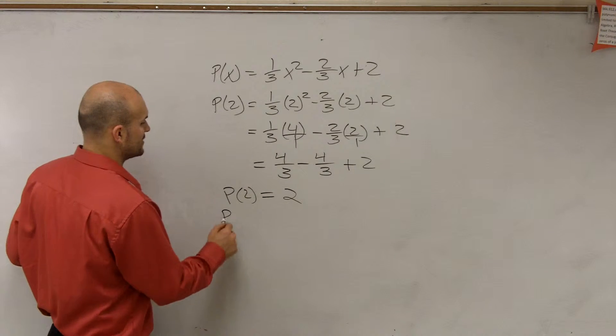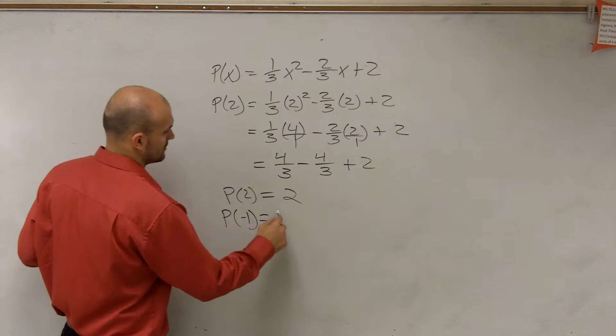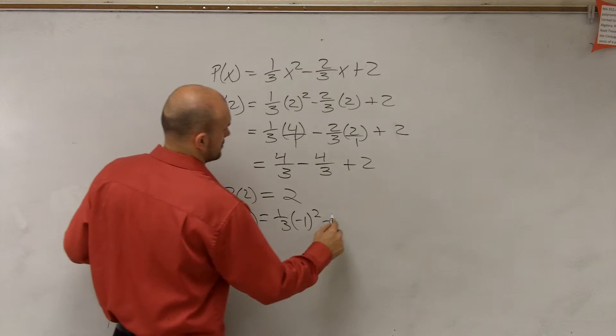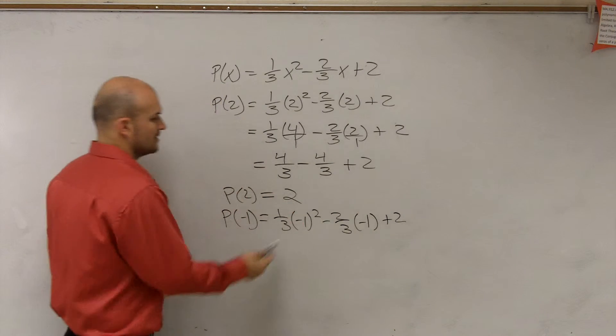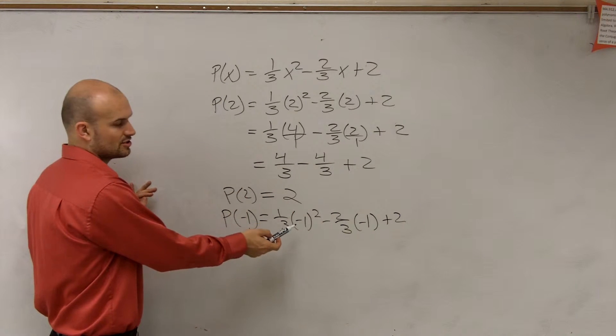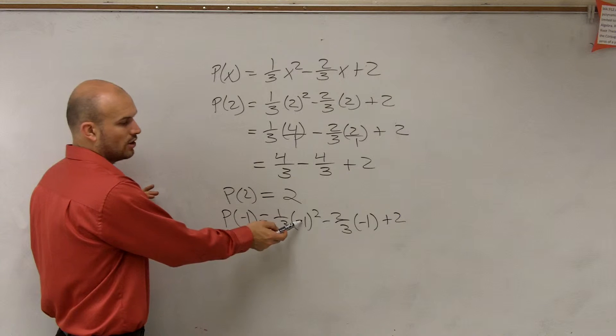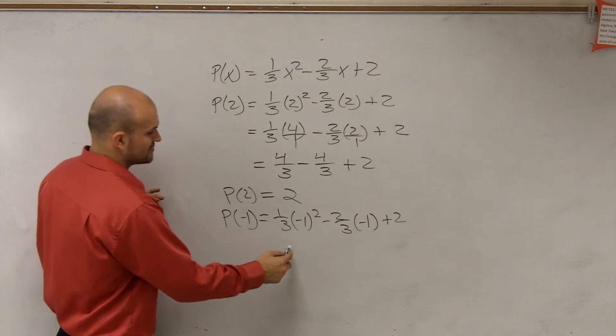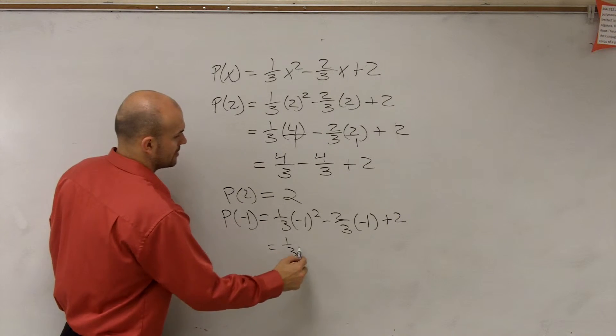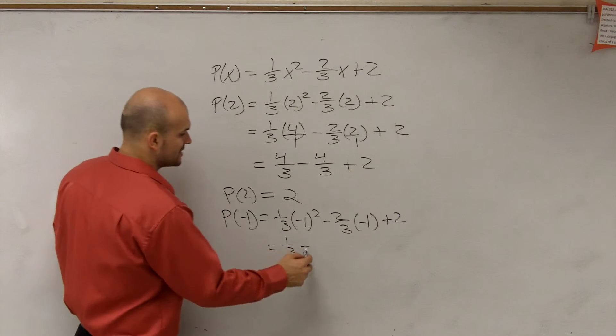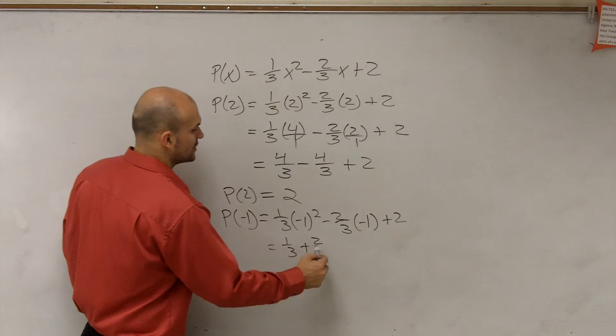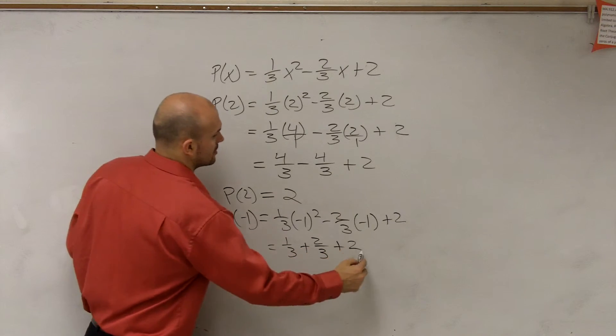Then let's do p of negative 1. So, I'm going to do this one in a couple shorter steps. Negative 1 times negative 1 is 1, which gives you 1/3. Minus negative 2/3 times negative 2/3 is going to give you a positive 2/3 plus 2.